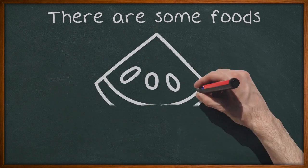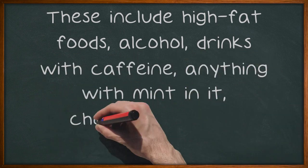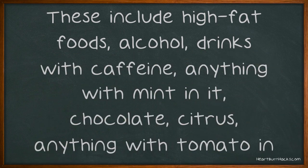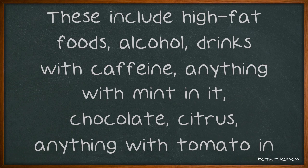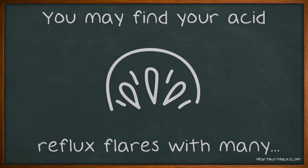There are some foods which people who suffer from acid reflux must avoid. These include high-fat foods, alcohol, drinks with caffeine, anything with mint in it, chocolate, citrus, anything with tomato in it, foods with spices in them, peppers, garlic, carbonated drinks and onions. You may find your acid reflux flares with many other foods as well, so make a list.